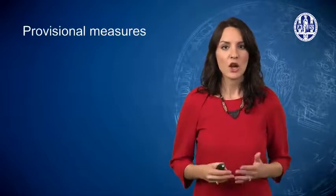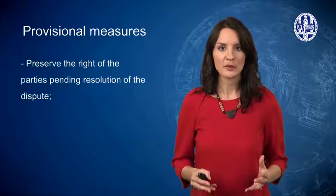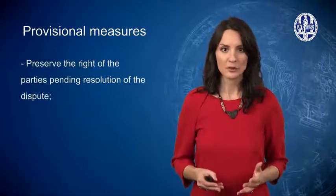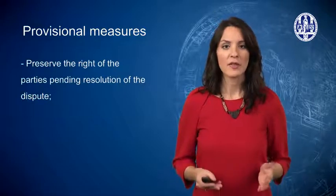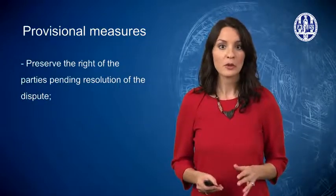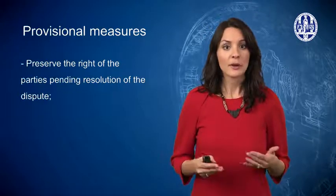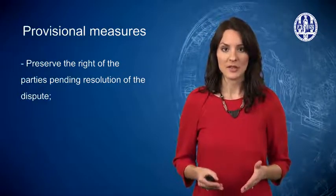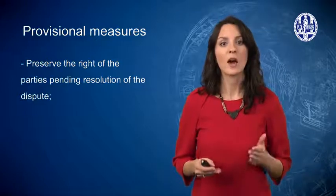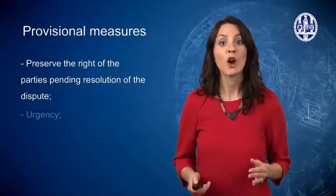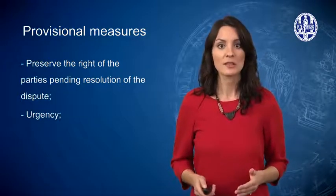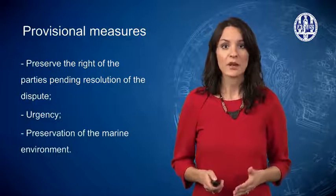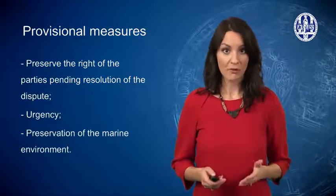ITLOS can indicate provisional measures — that is, urgent measures that are required to preserve the rights of the parties pending the resolution of the dispute. Even when the parties chose arbitration to settle a dispute, the constitution of the arbitral tribunal may take some time, so the parties can request ITLOS to indicate provisional measures. These requests are motivated by considerations of urgency. The parties can also request the indication of provisional measures for the preservation of the marine environment, which is not within the jurisdiction of the ICJ.